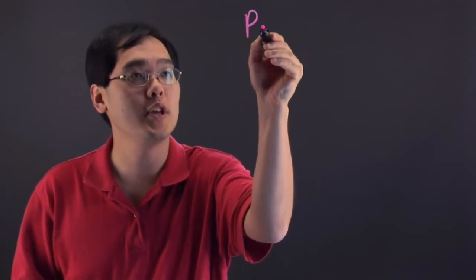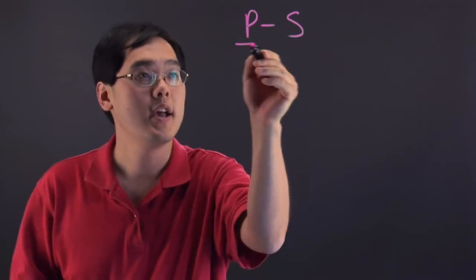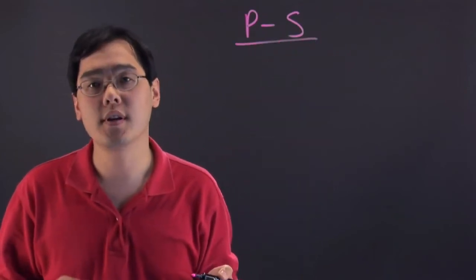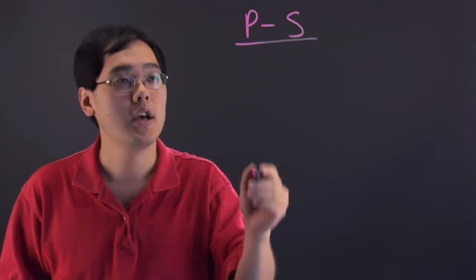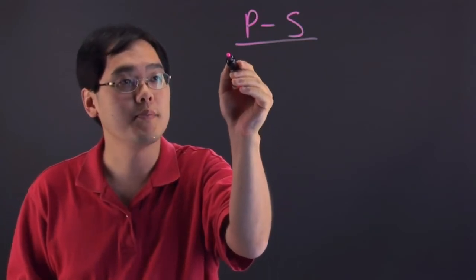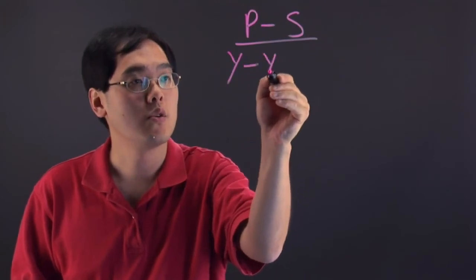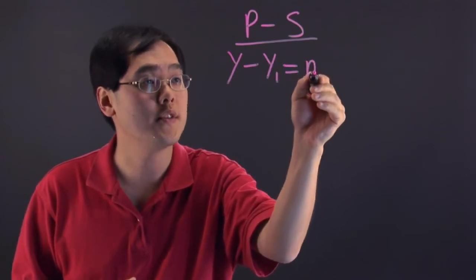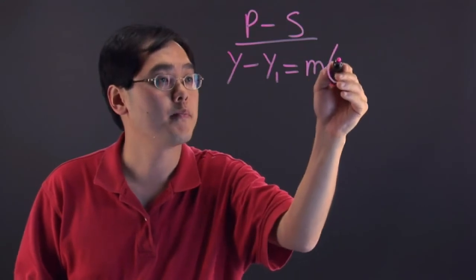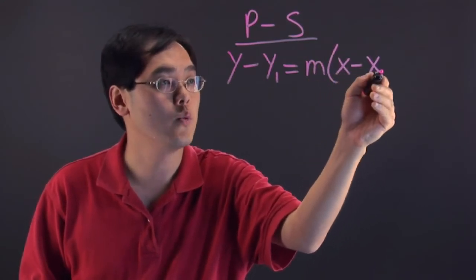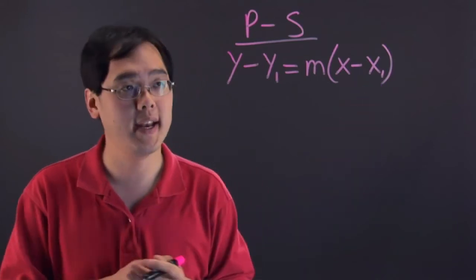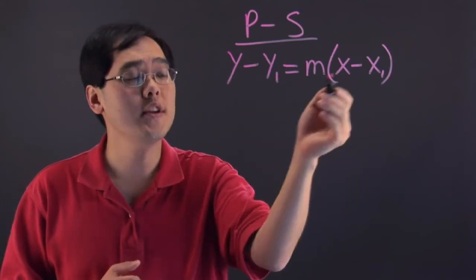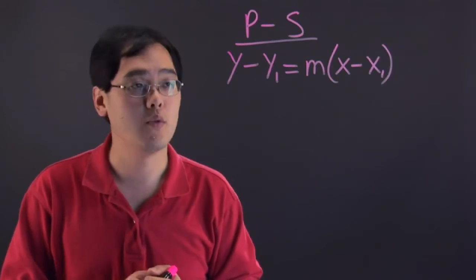We're going to discuss the differences between the two. First, we're going to address the point-slope equation — I'll abbreviate it as PS for short. You use the point-slope equation whenever you're given a point as well as the slope of the line. The form is y minus y1, which is the y coordinate given, equals the slope m, times x minus x1, which is the x coordinate of the point provided. If you're given a point and a slope, it allows you to graph a line rather easily.